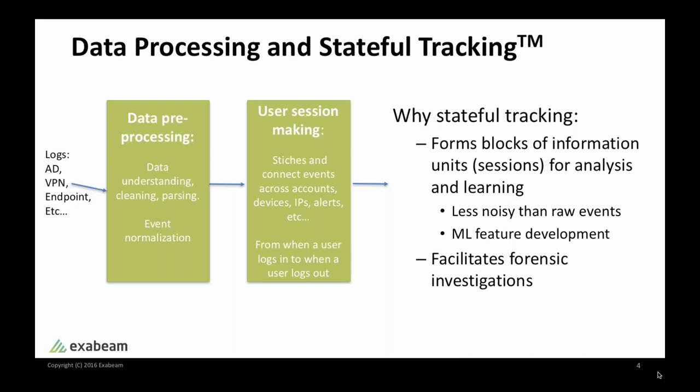Stateful tracking is important in two ways. First, it organizes events into blocks of information units for analysis and learning. From a data science perspective, when we abstract data in terms of sessions, we count things in number of sessions rather than number of raw events. Counting at the session level is much more stable and less noisy compared to counting raw events. User sessions are really the most natural information units for anomaly detection. Once you have sessions, you can derive feature vectors on them and design a vector space on top of which you can apply machine learning methods to find outliers.